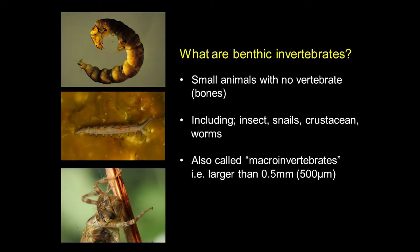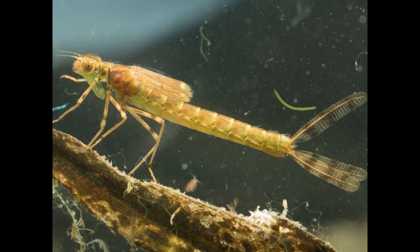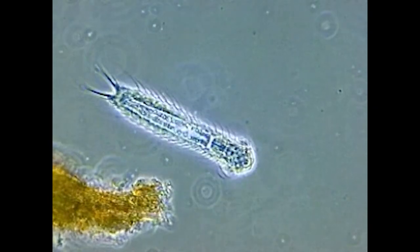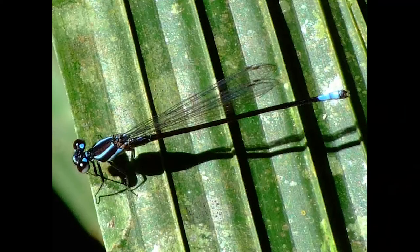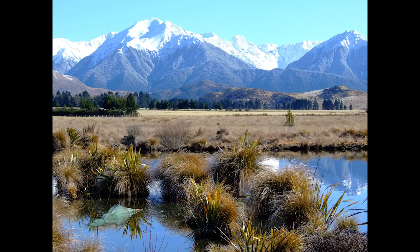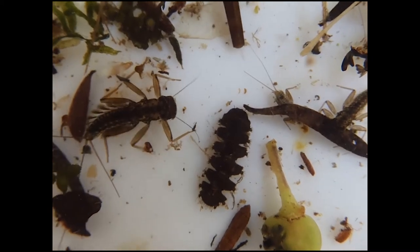They're often called macroinvertebrates. Macro means large, and a macroinvertebrate is generally an animal that's greater than 0.5 of a millimeter, or 500 microns. So they can be really small — sometimes you can barely see them with the naked eye — and then sometimes they're quite large insects. Benthic invertebrates are commonly found in streams, rivers, ponds, and lakes, and in fact just about any type of waterway will have some sort of benthic invertebrates.